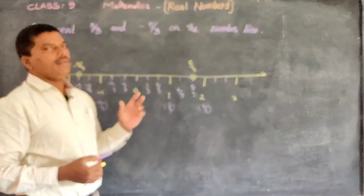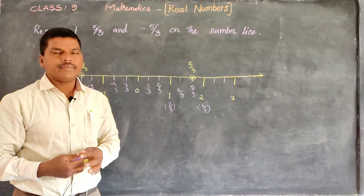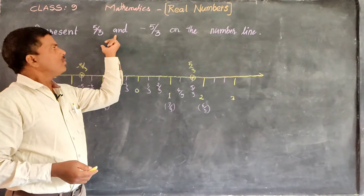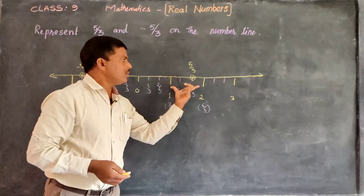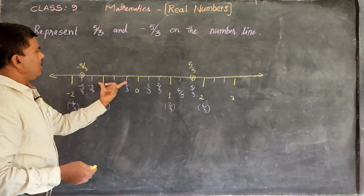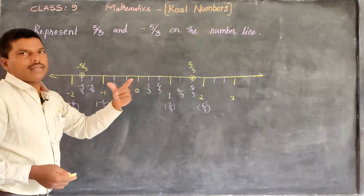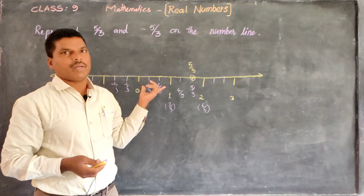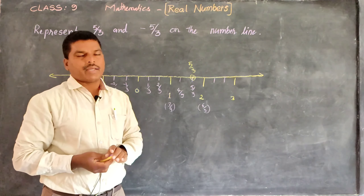In this way, we can represent any fraction on the number line. This is the method. What we have to do here is divide according to the denominator. Here the denominator is 3. Therefore, we have to divide each unit into 3 equal parts — on both the positive and negative sides. On the basis of the denominator, we divide each part into that many equal parts, and in that way we can represent any fraction on the number line.